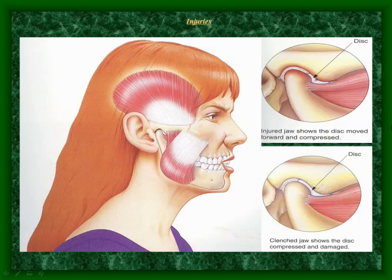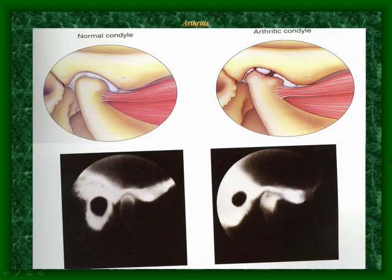TMD can be caused by a relocated or damaged disc in the jaw joint. On one side, a normal condyle shows a lot of space between the upper and lower bone, whereas on the other side, the disc and the bone have been damaged. This removes the space between the bones, where they now grind against each other every time the jaw moves.